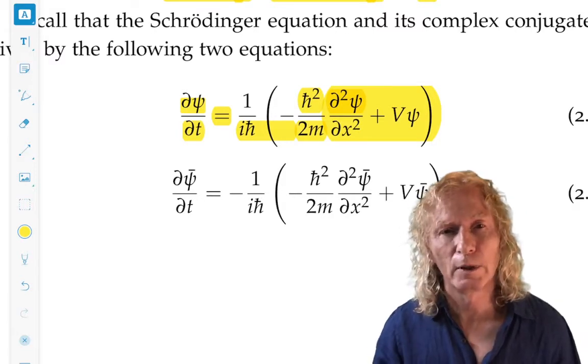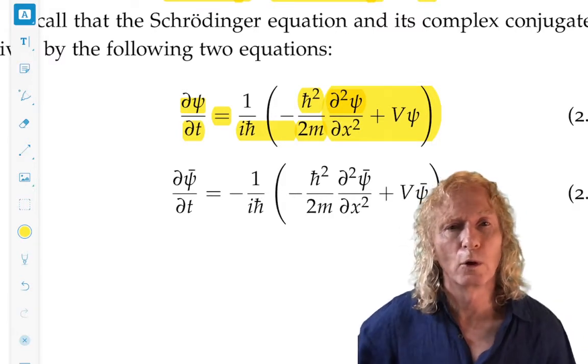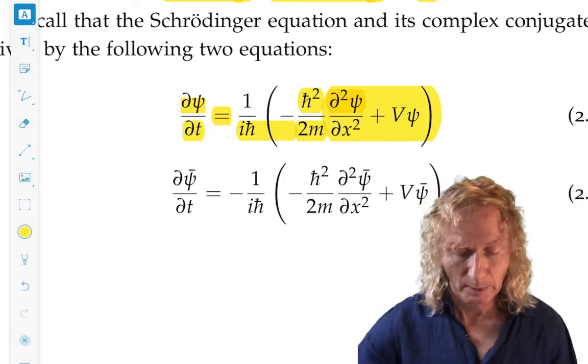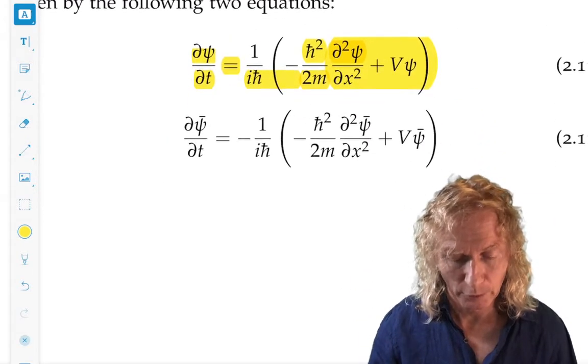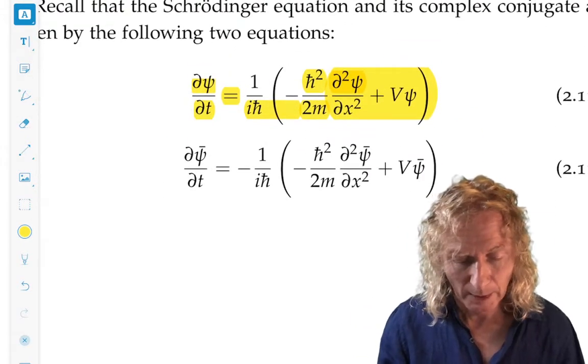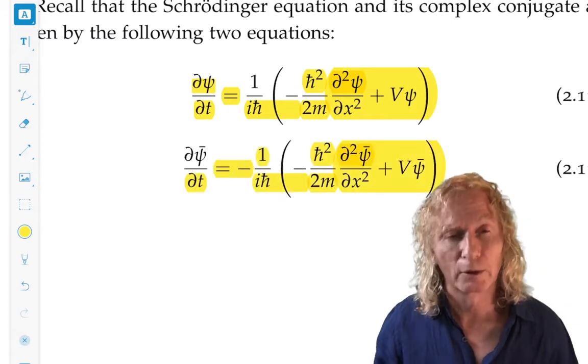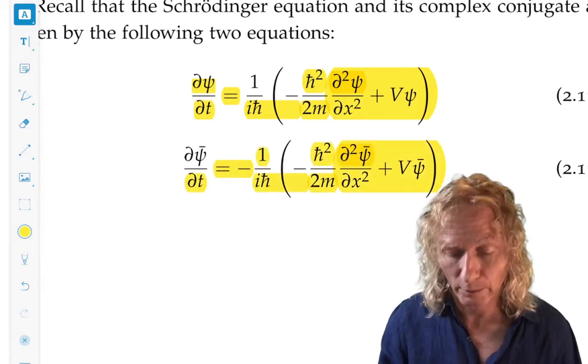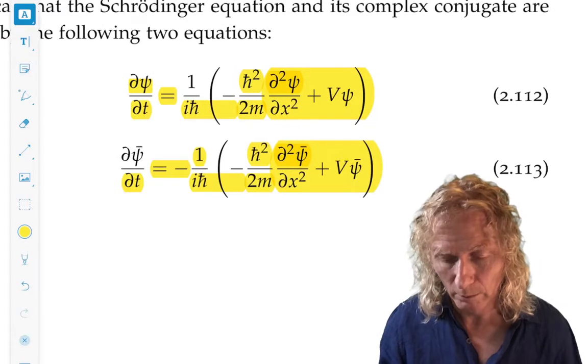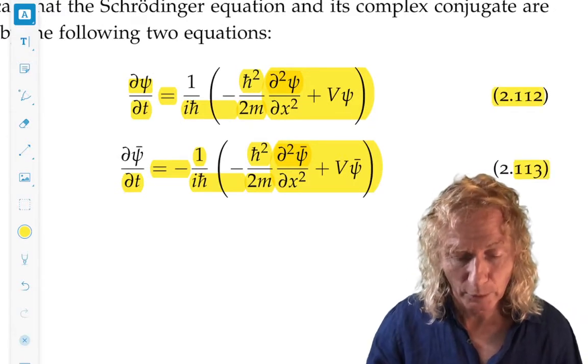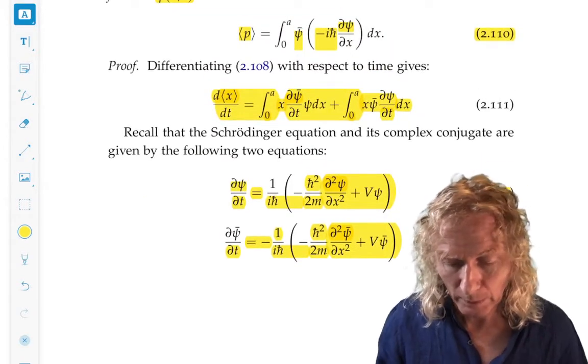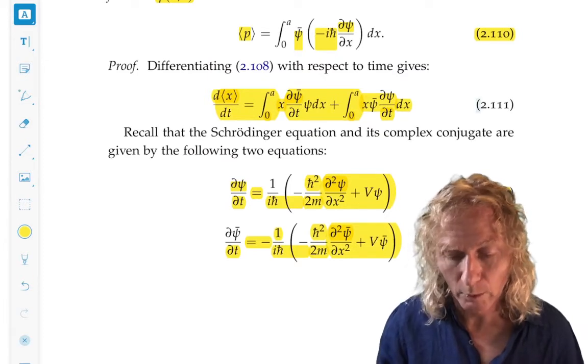Now, I've gone ahead and left V in here even though it's zero for the square well, but just for generality at the moment. And then we can take the complex conjugate of the expression 2.112. We substitute those into the integral expression 2.111.